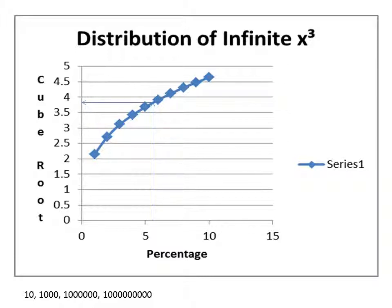But you'll be using, when you're trying to find the percentage, it's different from x squared. So you'll be using numbers like 10, 1000, 1 million, and 1 billion. You're going up by those amounts.